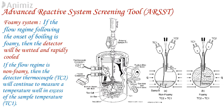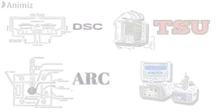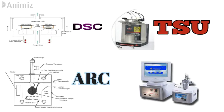Two-phase flow — churn-turbulent or homogeneous, tempered and non-tempered systems, foamy and non-foamy systems, and vent size calculation — are topics we will cover in upcoming videos. Note that DSC, TSU, ARC, and ARSST are not purely powder testing techniques. With the help of these tools, we can also assess the thermal risk associated with reaction mass, as well as onset temperature and thermal events associated with intermediate steps of a reaction.